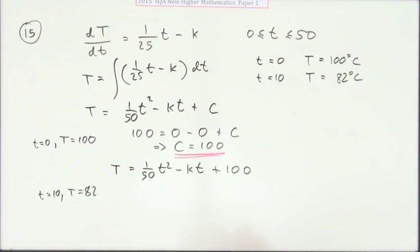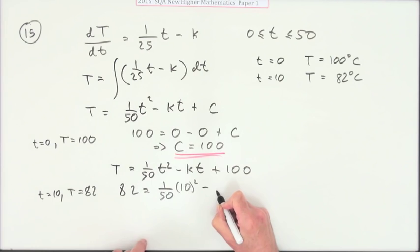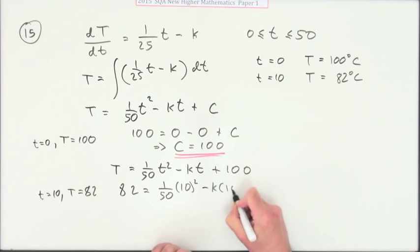That's still a bit hot to drink after 10 minutes - it must be some sort of insulating mug. What have we got? So 82 is 1/50 of, but this time I've got numbers to put in: 10 squared minus k times 10 plus 100.